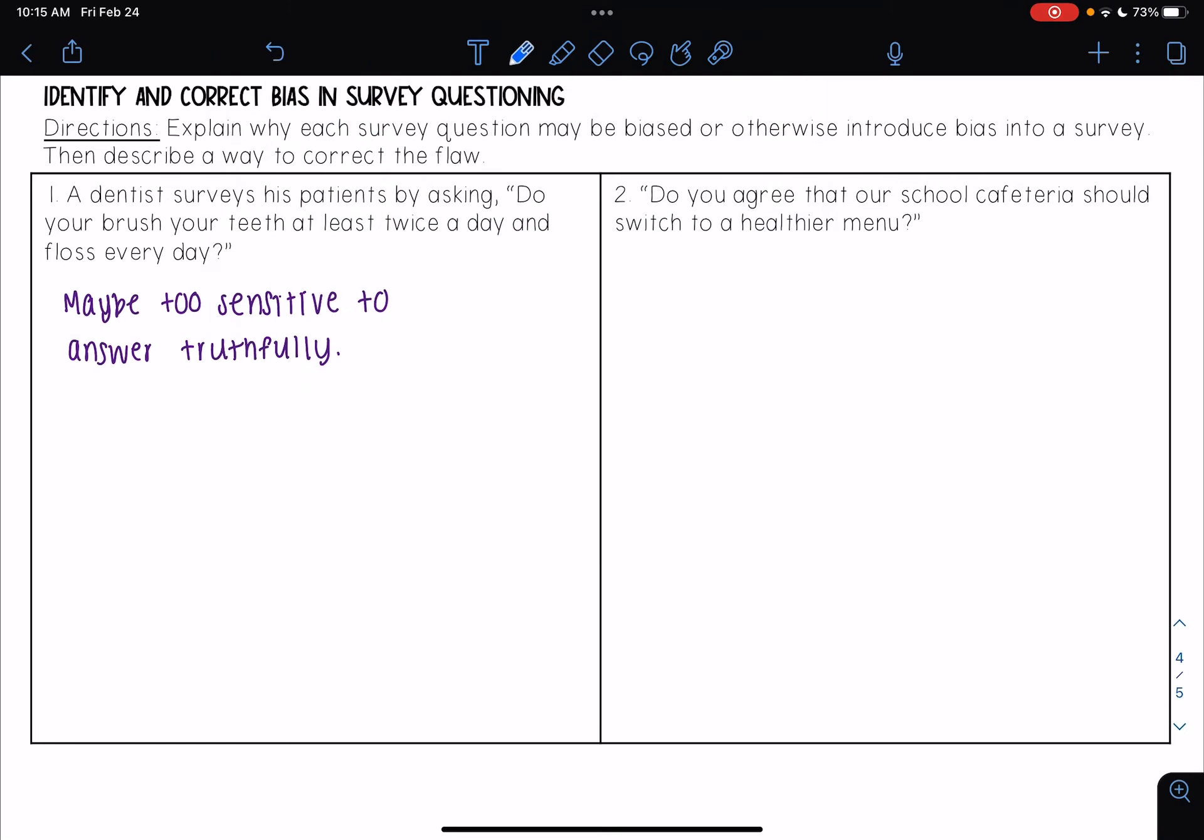One way we could correct this flaw is to have patients answer questions about dental hygiene on paper and then put the paper anonymously into a box. I'm going to write: have patients answer on paper and put anonymously into a box.